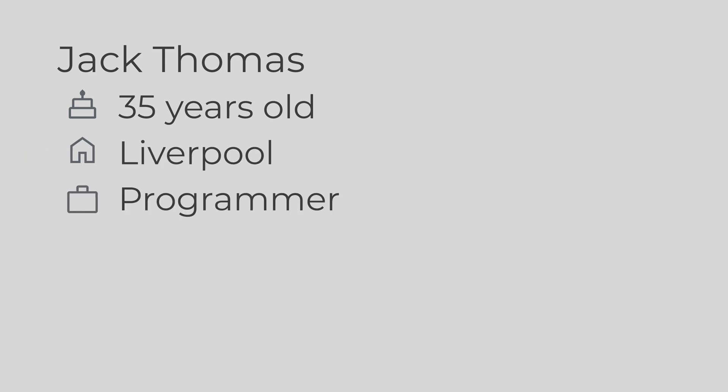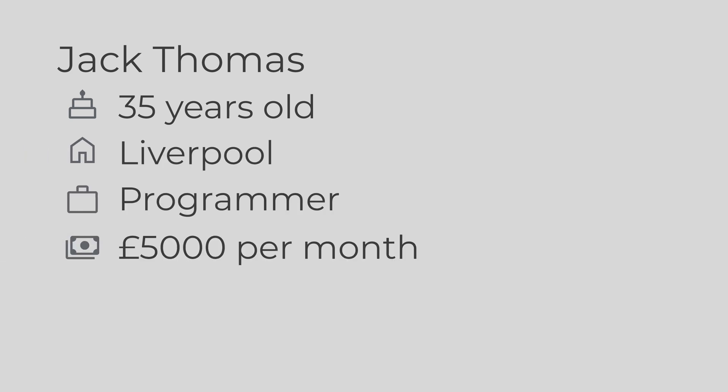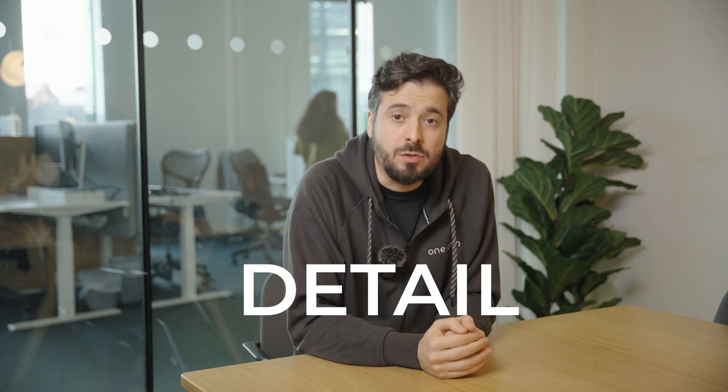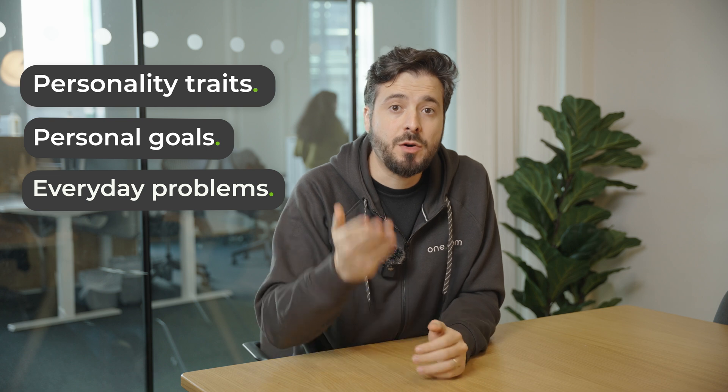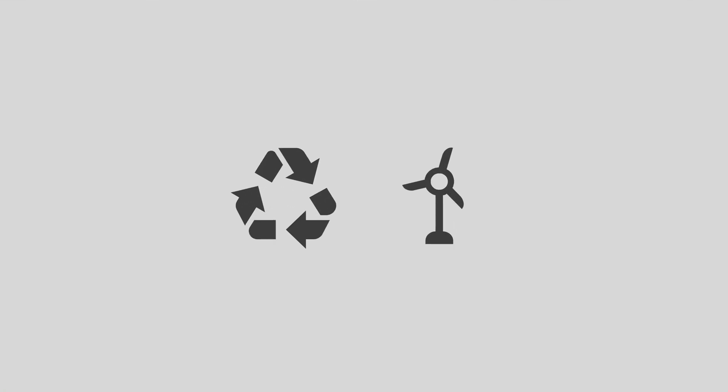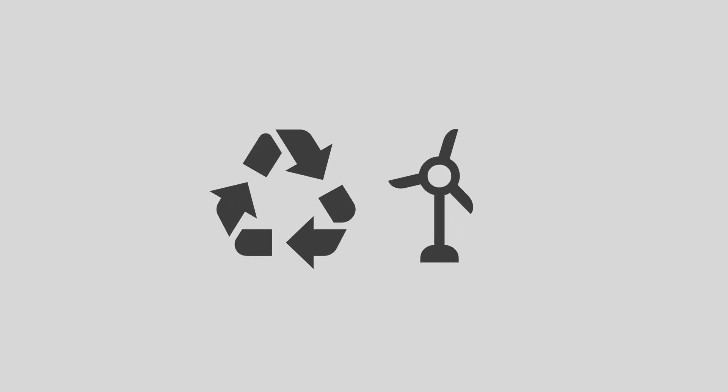He's 35 years old and lives in Liverpool. He works from home as a programmer, earns 5,000 pounds per month, is single, and is interested in gaming. When creating our customer avatar, it's always good to write it out in detail — describe personality traits, personal goals, and everyday problems for our target customers. Even small details can help an AI write a good product description. For example, Jack is environmentally conscious and doesn't like buying new products, which helps us understand what problems our product can solve.